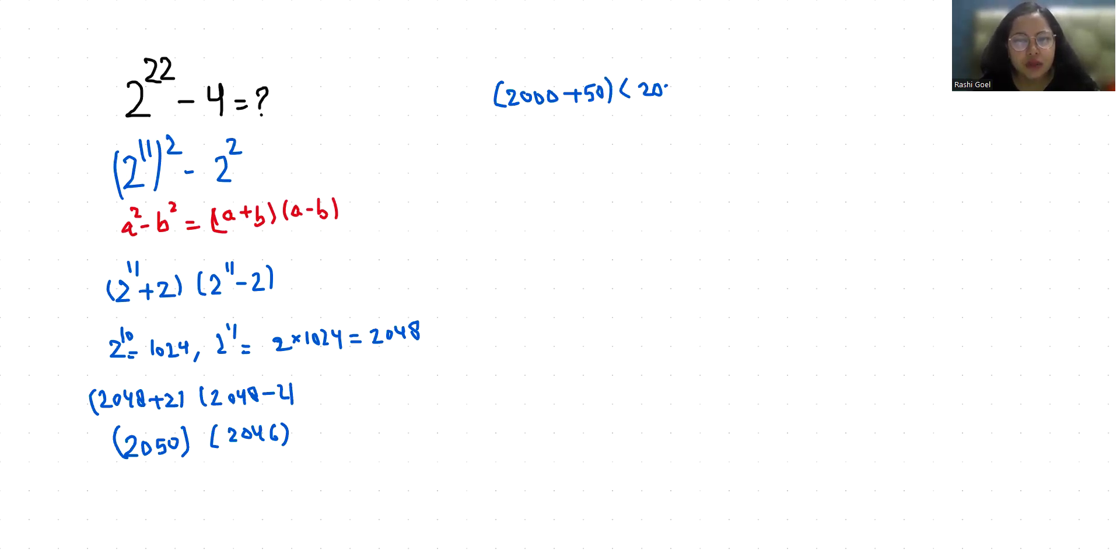2000 times 2000 is 4000000, plus 2000 times 46 is 92000, and 50 times 2000 is 100000, and 50 times 46 is 2300.